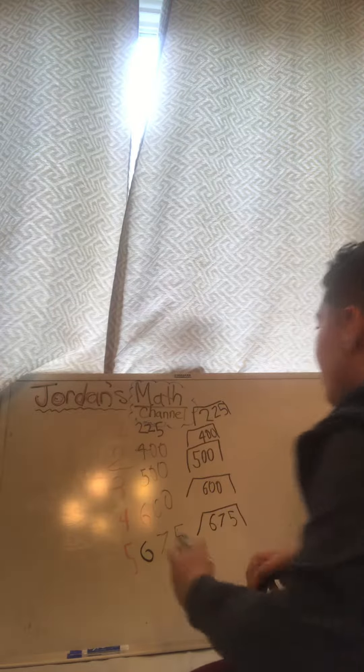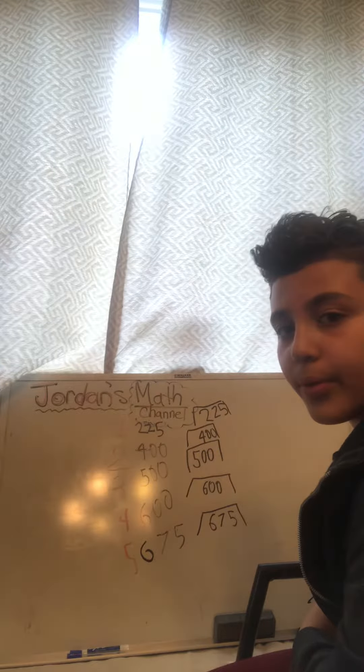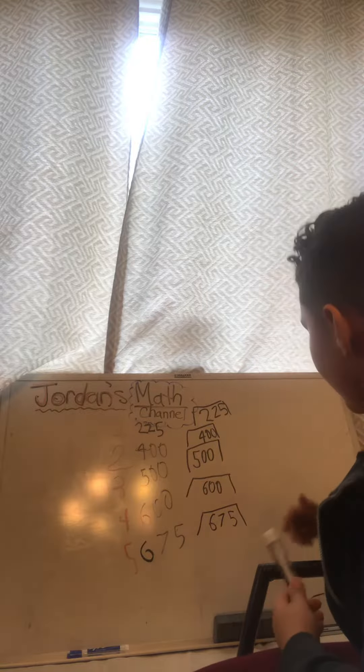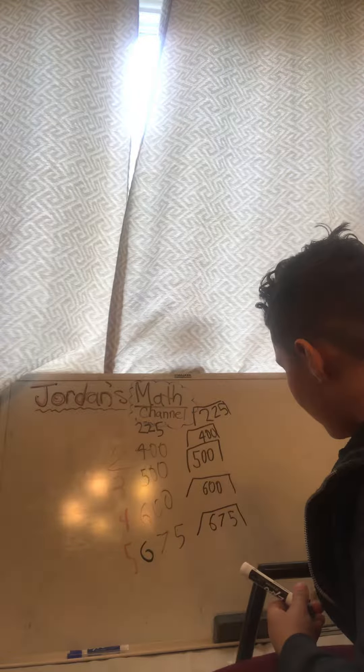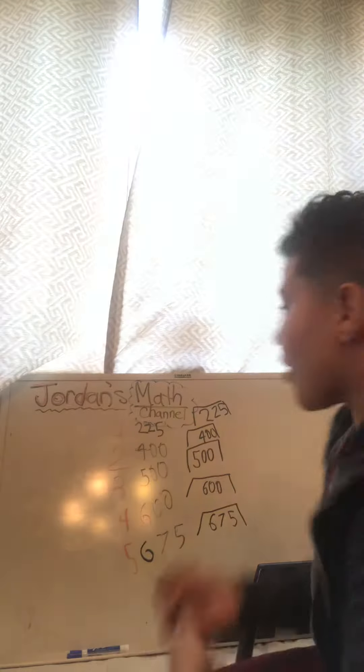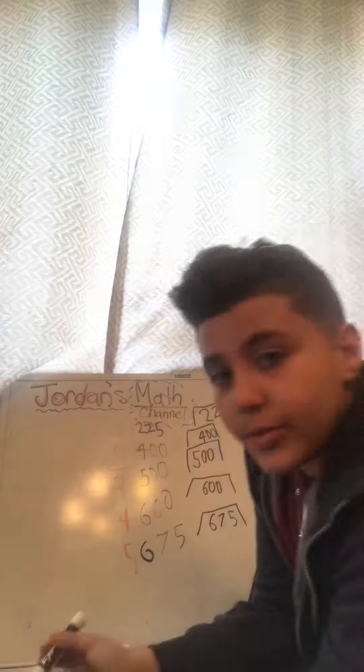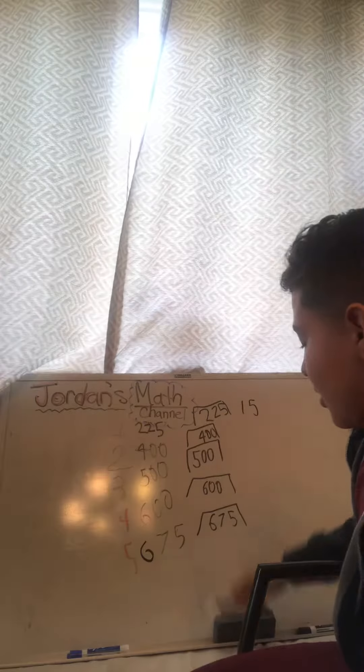Alright, the first one is what is a factor of 225. 225 divided by something equals that. Do you know that it's 15? Because 15 times 15 is 225. Because 1 plus 1 is 2, and then 5 times 5 is 25, so 225.